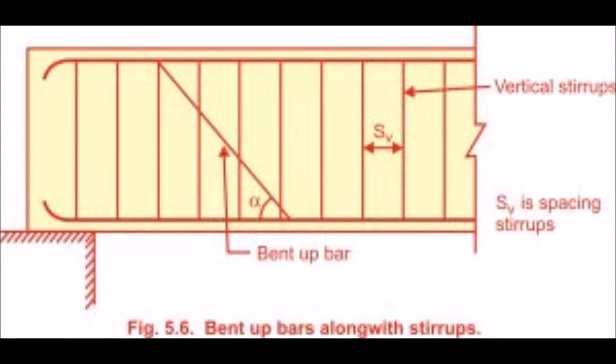For shear reinforcement, this is the general representation of stirrups in the beam. We can also see the bent-up bar, and Sv is the spacing of the stirrup. Note that reinforcement in the compression zone does not contribute to shear resistance — only the tension bar contributes to shear resistance.